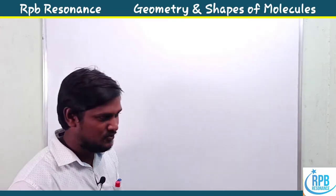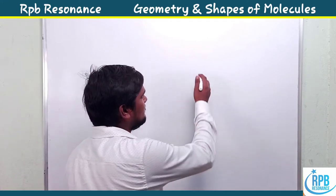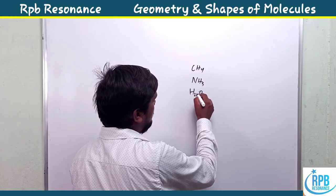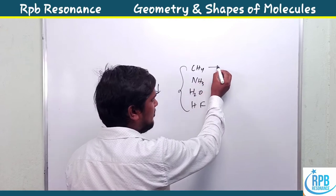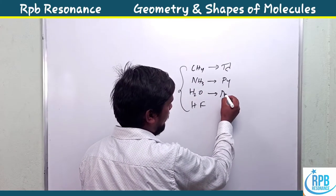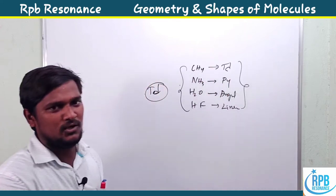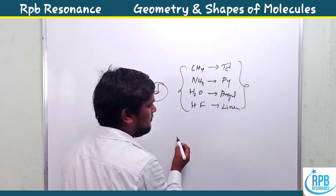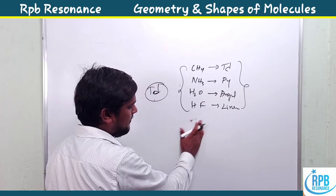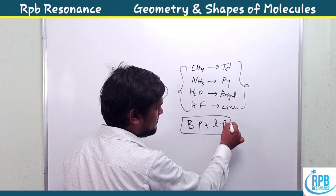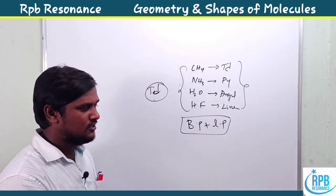Hi everyone, welcome to the RPP Residence Chemistry. Today we are going to deal with some of the inorganic molecules' geometry and their shape. Some molecules, for example CH4, ammonia, and water, all have the same tetrahedral geometry but different shapes - tetrahedral, pyramidal, angular or bent, and linear. The geometry and shapes of the molecules are explained based on their hybridization along with bond pairs (BP) and lone pairs (LP) of electrons.